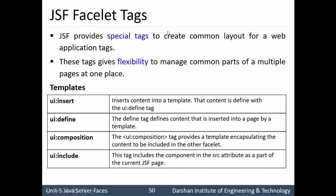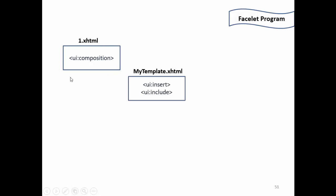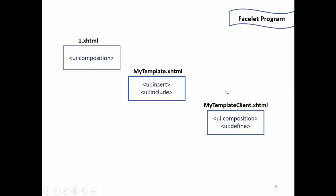Let us start with the program of facelet tags, which will use all four facelet template tags. First I will create one.xhtml using ui:composition tag. Next I will create my template, which will use insert and include tags. Then I will create mytemplate-client.xhtml, which will use ui:composition as well as ui:define tag, and execute it. In this file I will include a string, create a template of that string, include one.xhtml into my template, and then include my template into the template client.